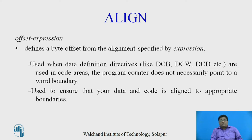ALIGN directives are used when data definition directives like DCB, DCW, and DCD are used in code areas, as the program counter does not necessarily point to a word boundary. ALIGN is used to ensure that data and code is aligned to appropriate boundaries, meaning the data space and code space should be separate.